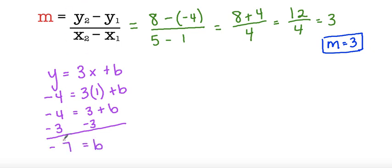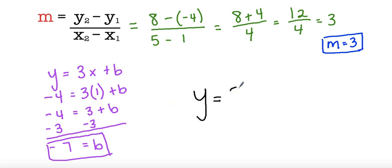So this is our y-intercept. We know our slope is 3 and our y-intercept is negative 7. So y equals 3x minus 7, and this would be our linear equation in slope intercept form.